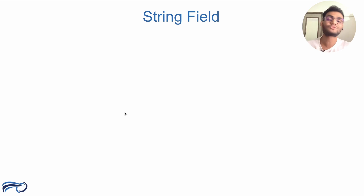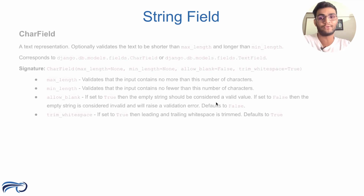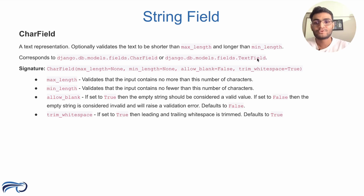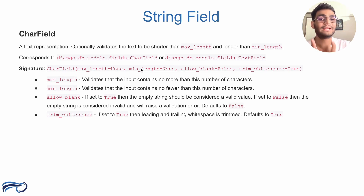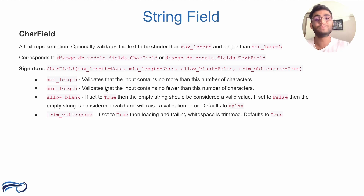The next category is string fields, of which there are multiple. Starting with CharField, which is a normal text representation corresponding to the model's CharField and TextField. It has four default argument values: max_length is None, min_length is None, allow_blank is False, and trim_whitespace is True. max_length tells that the input value cannot contain more characters than this number. min_length tells that the input value cannot contain fewer characters than this number.